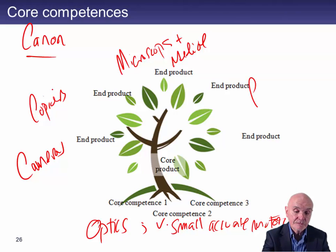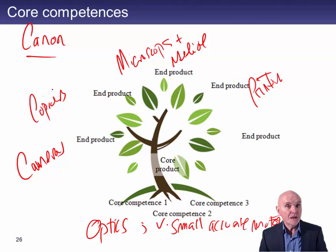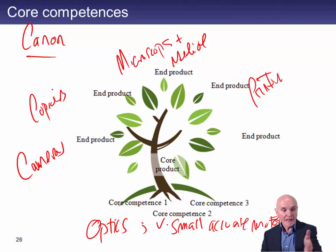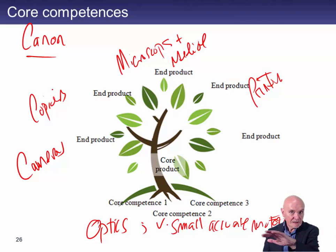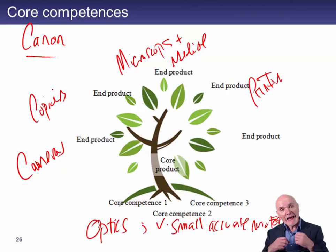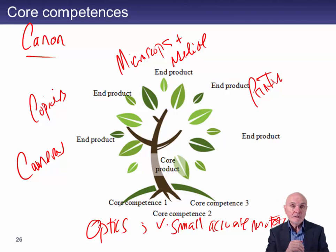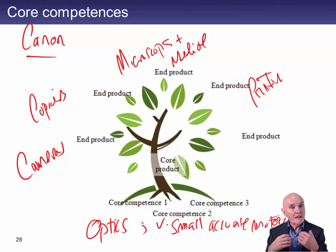Canon also makes printers — inkjet printers, sometimes combined with a copier or fax machine. You need to scan, you need optics, you need the motor moving along accurately as the print head moves. So Canon is in many different business areas — consumer, medical, office — but in each sector it is making use of its core competences in a different way.